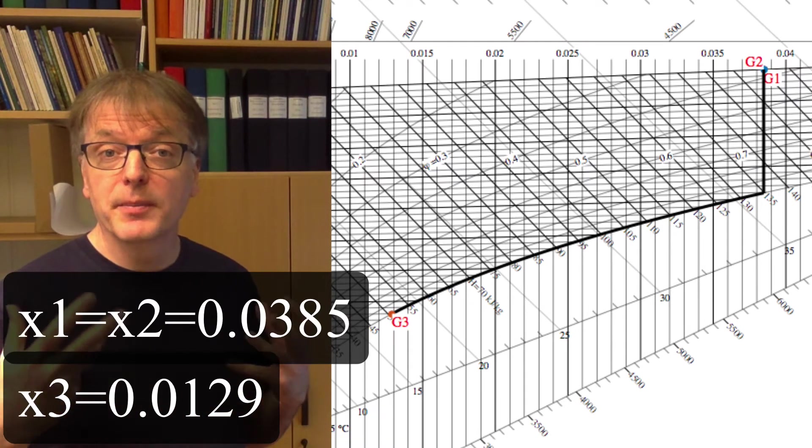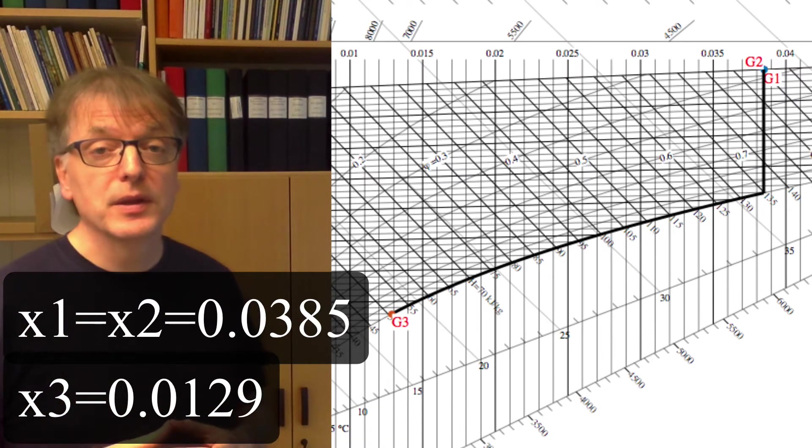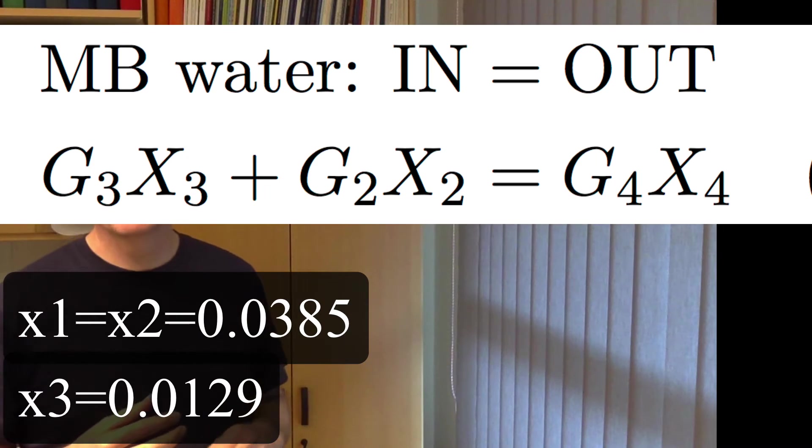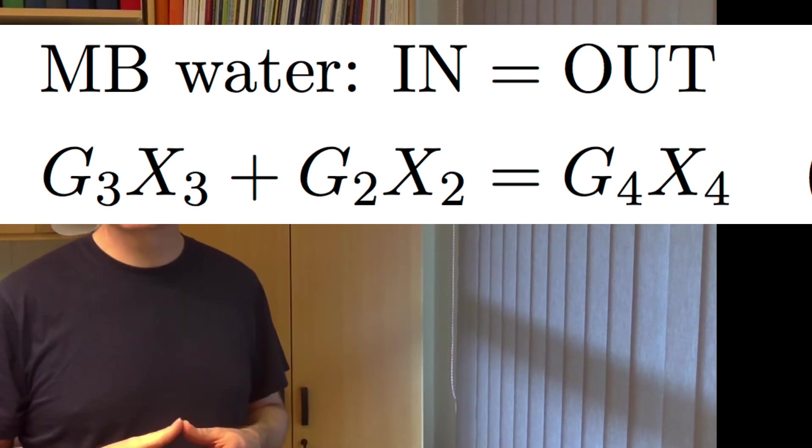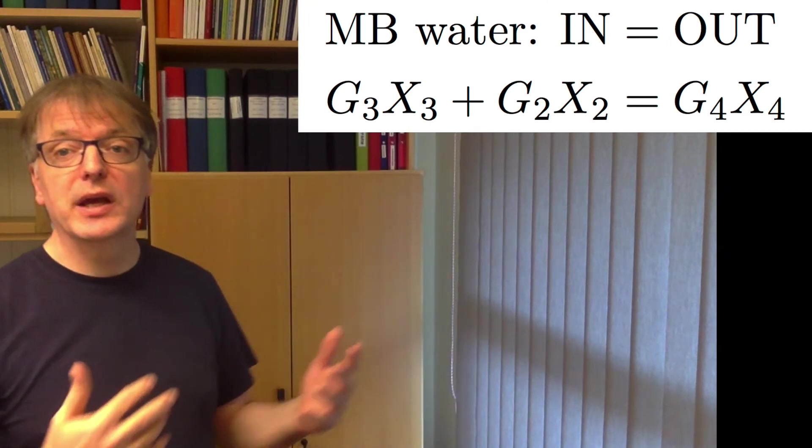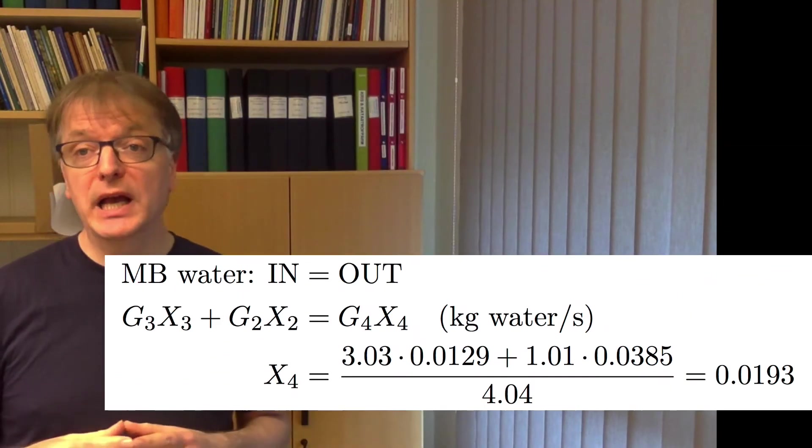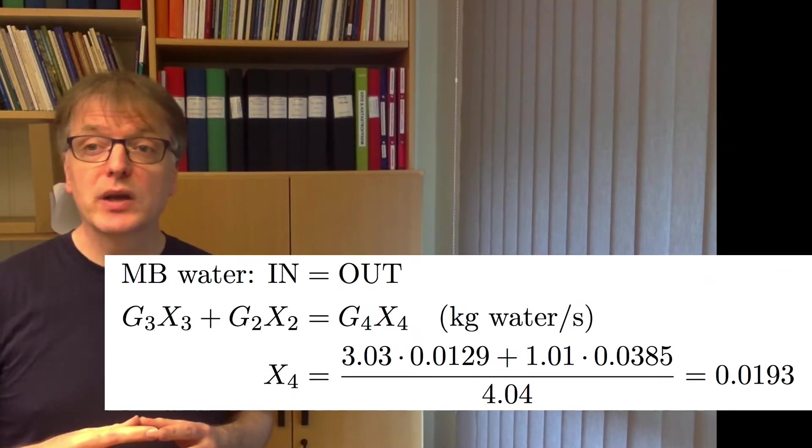So we can make a mass balance for water. So g3 times x3 plus g2 times x2 equals g4 times x4. And we can rearrange, and then we find x4 as 0.0193.